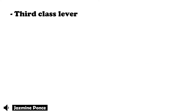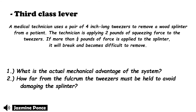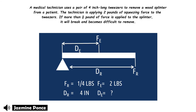Last is the third class lever problem. A medical technician uses a pair of 4-inch long tweezers to remove a wood splinter from a patient. The technician applies 2 lbs of squeezing force. If more than 1 lb of force is applied to the splinter, it will break and become difficult to remove. We illustrate: FR = 1/4 lb (force on splinter, must stay under 1 lb), DR = 4 inches, FE = 2 lbs, DE = unknown.